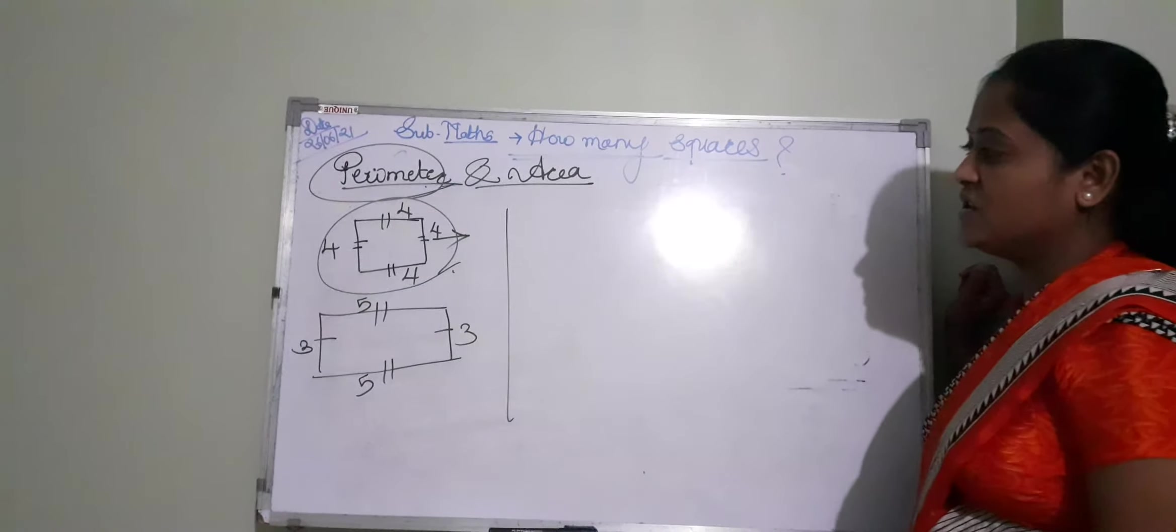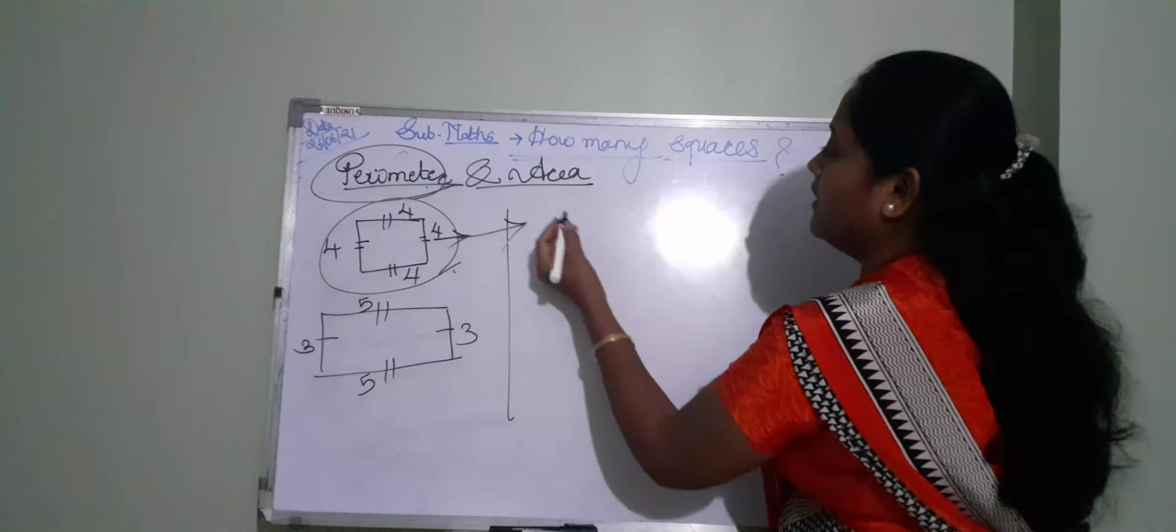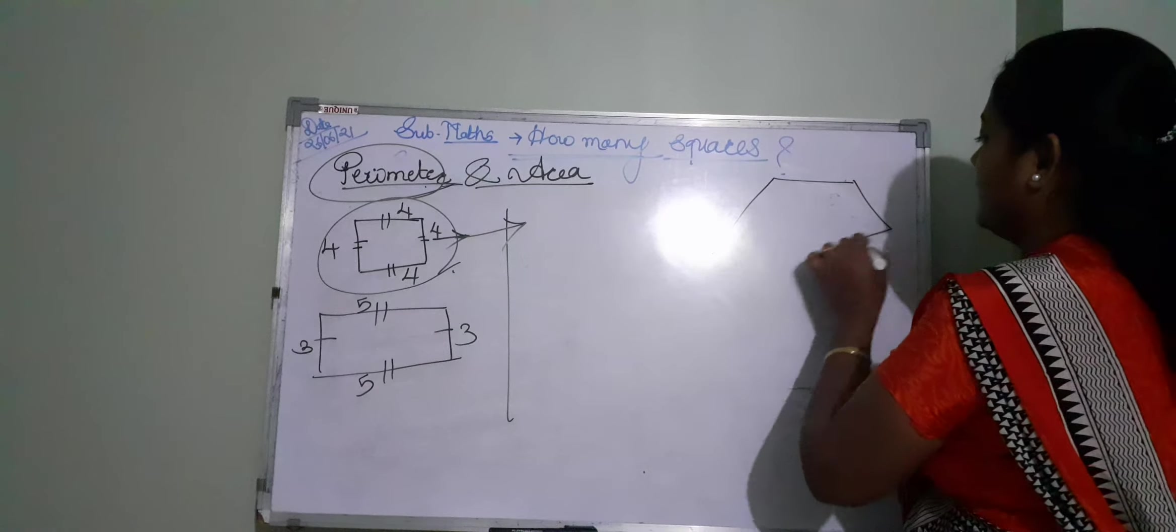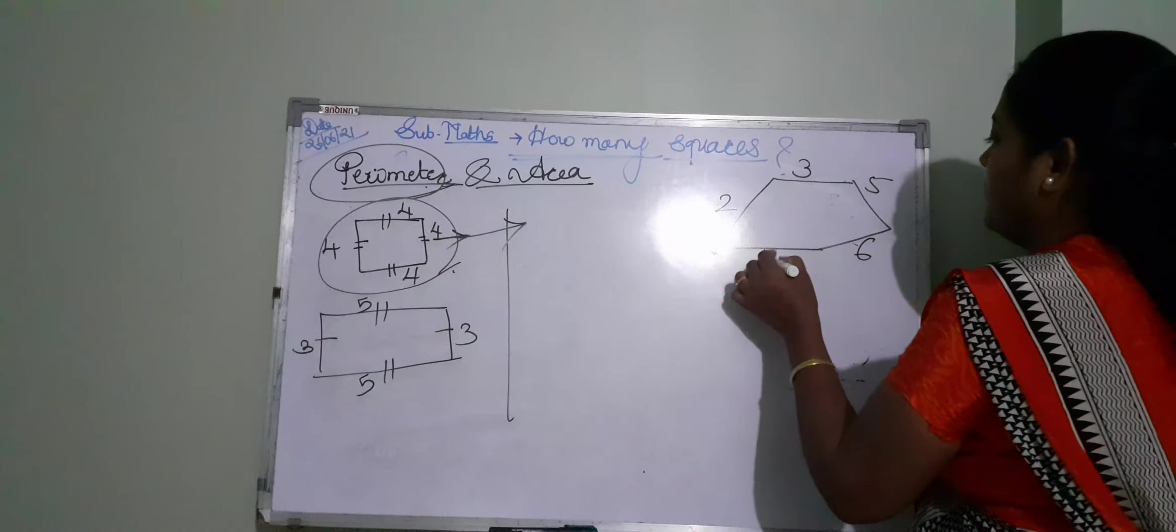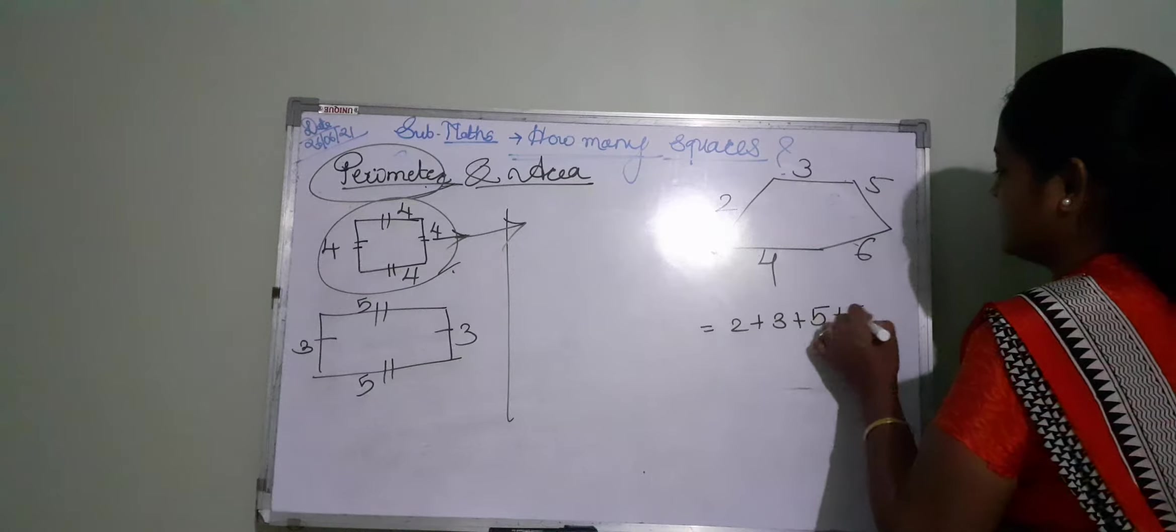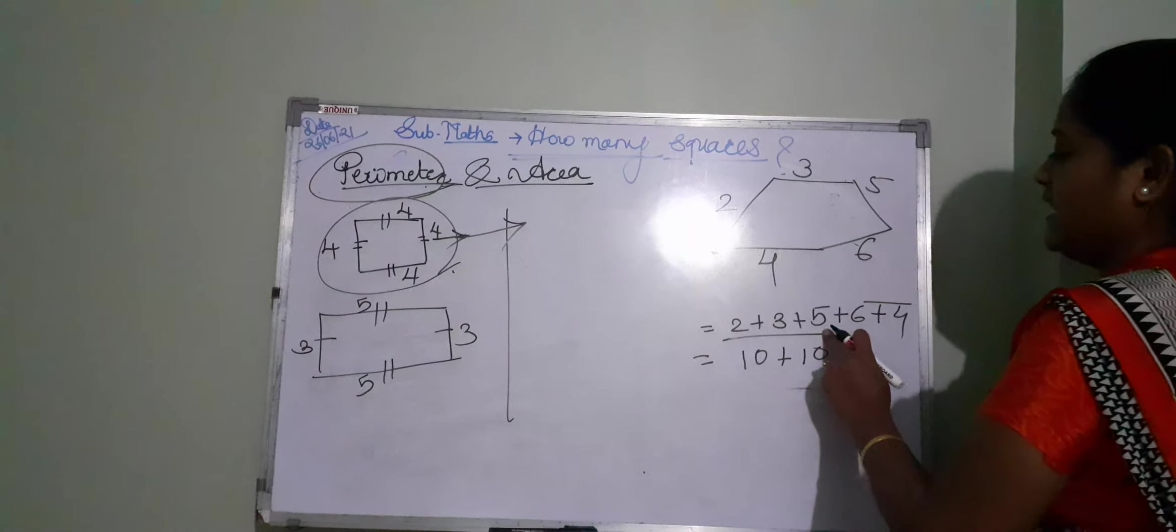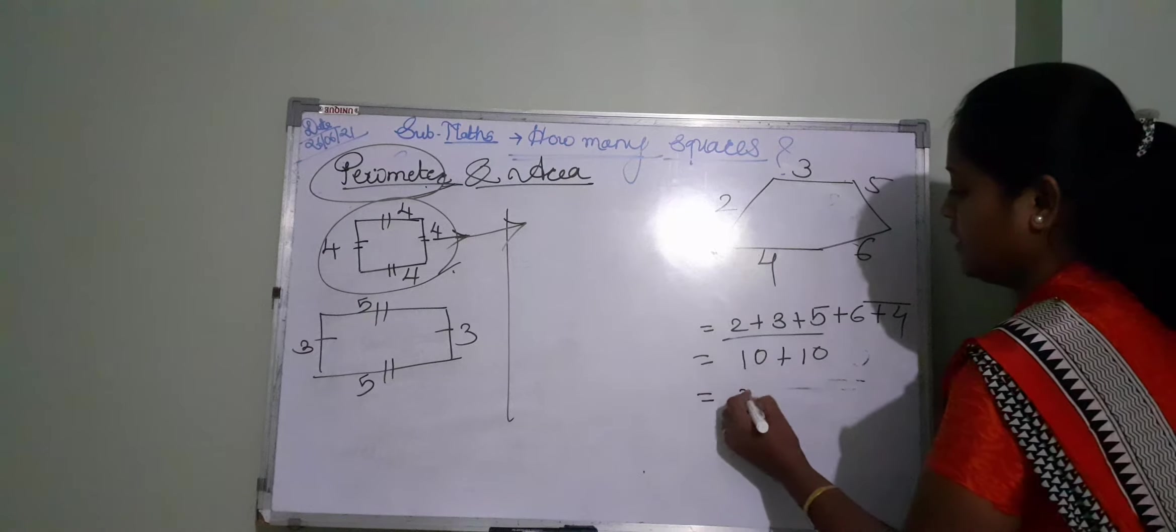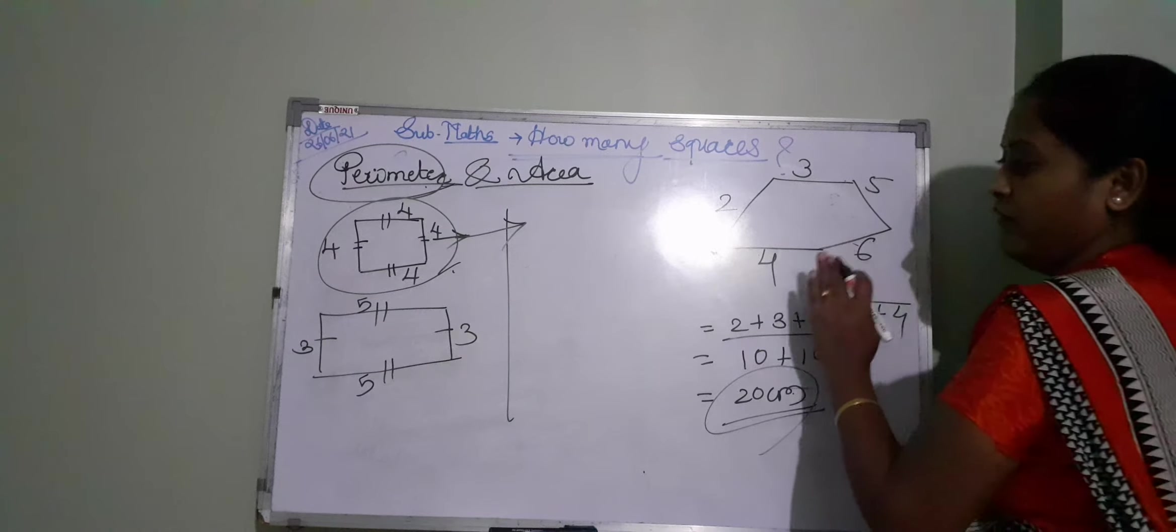Okay students, you just add the sides that are given. Is that clear? Here, suppose the figure is like that only, and they are saying find the perimeter of that figure. That means you just add 2 plus 3 plus 4. That means answer will be 2 plus 5, it is 7. 7 plus 3, it is 10. 6 plus 4, it is 10. 10 plus 10, it is 20 centimeters. It is the perimeter of that given figure.